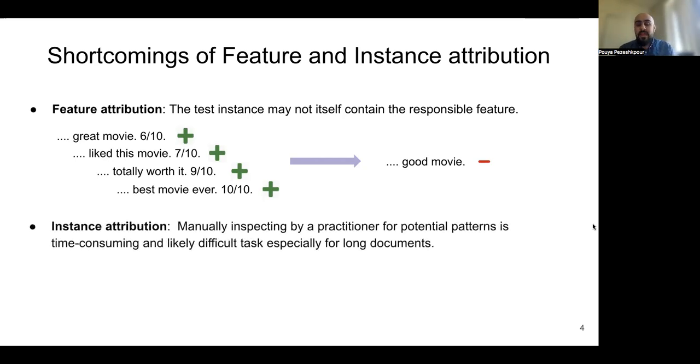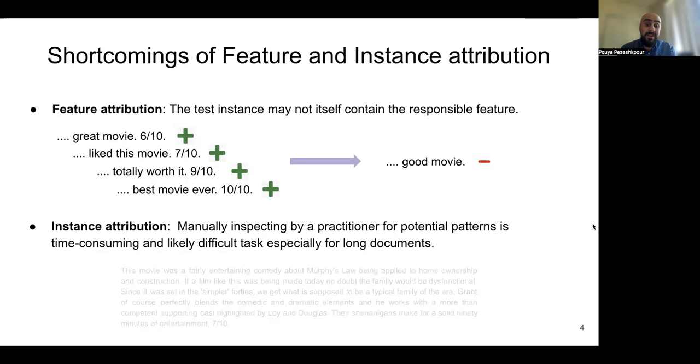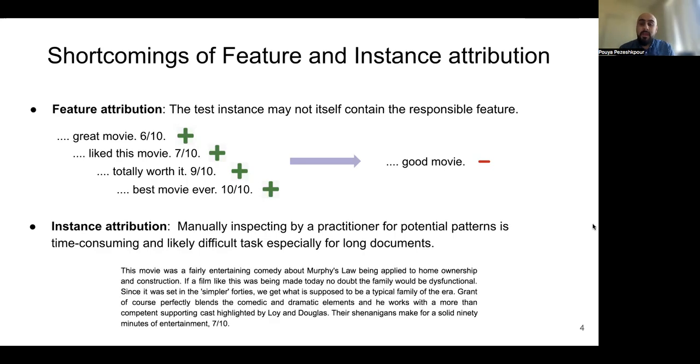And also, instance attribution explain model prediction by extracting an instance from train data, which most of the time is very lengthy. So providing this instance to a user and expecting the user to detect artifacts is not very feasible. So somehow we want to combine these two different attribution method and highlight, for example, the rating here as a source of model misbehavior.